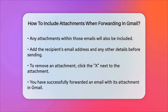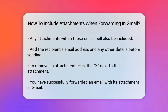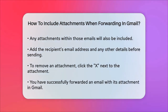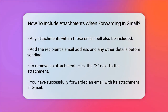To remove an attachment from a forwarded email, if needed, you can simply click the X to the right of the attachment. That's it — you've successfully forwarded an email with its attachment in Gmail. This method ensures that the recipient receives the email and its attachments just as you sent them, making it a convenient way to share files and messages.